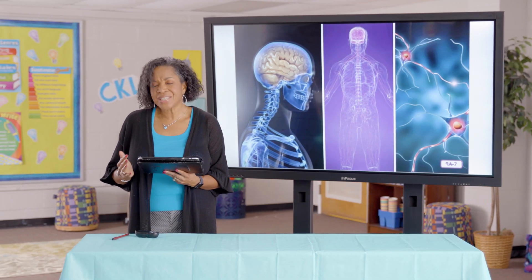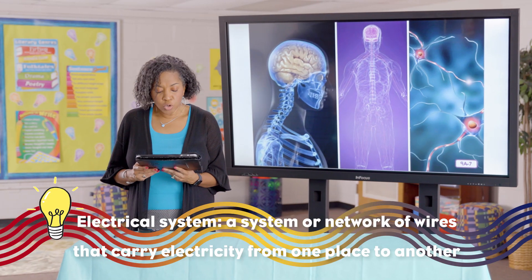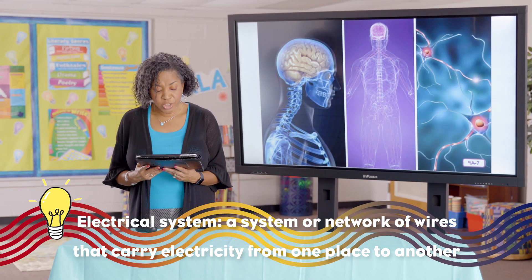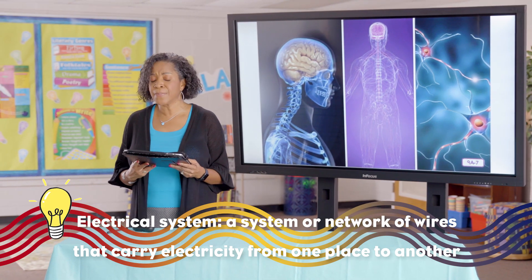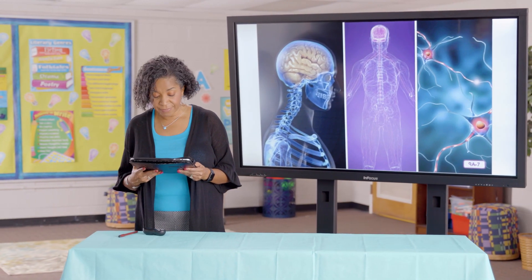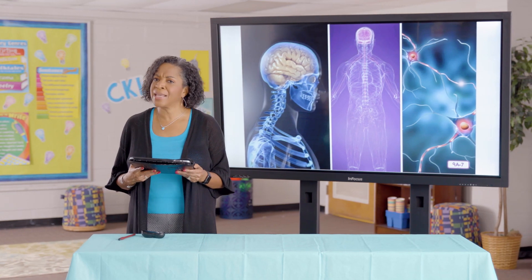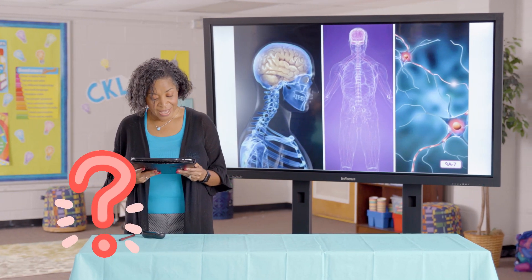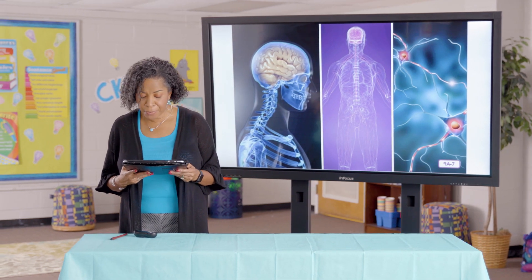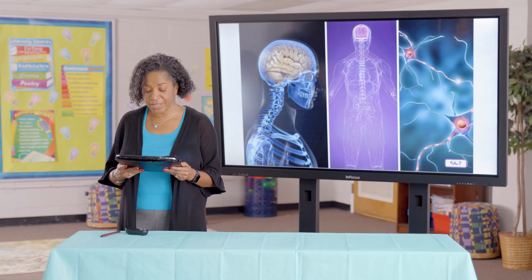Your nervous system is like an electrical system. Electrical wiring, whether in your house or in your body, can be shorted out if something goes wrong. It's no surprise that diet and exercise are just as important to your nervous system as they are to other systems.